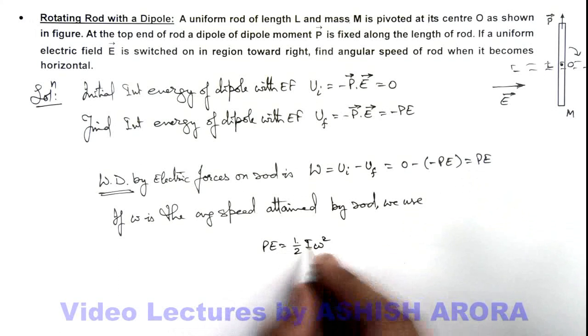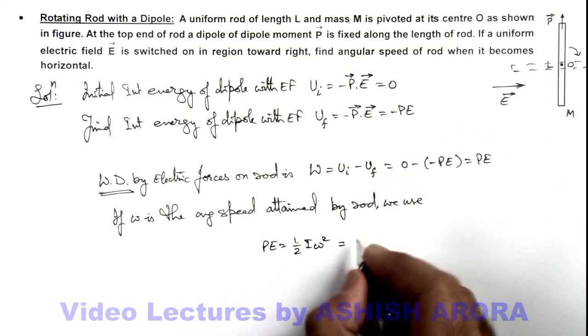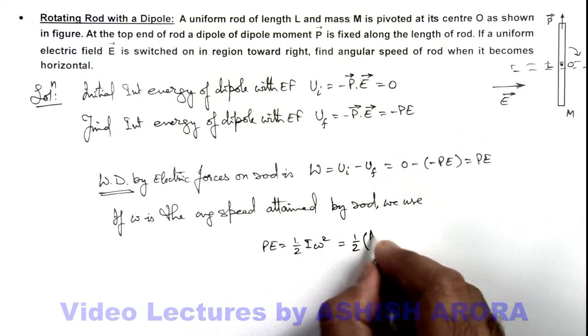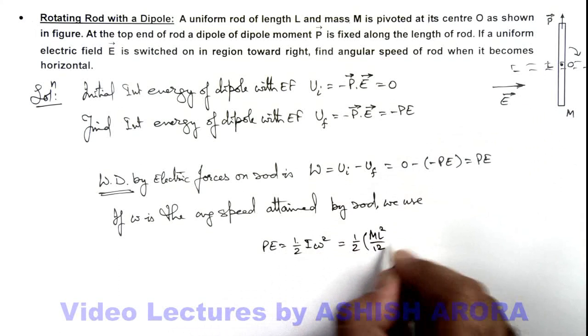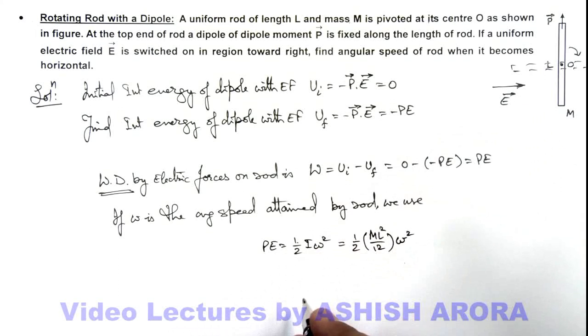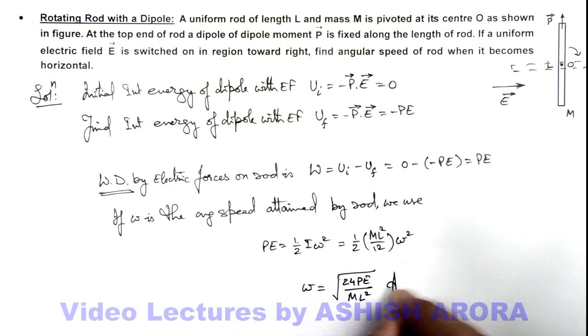Here moment of inertia of the rod about its central axis of rotation I can write as ML square by 12, multiplied by omega square. So on simplifying this, I am getting the value of omega as root of 24PE divided by ML square. That will be the answer to this problem.